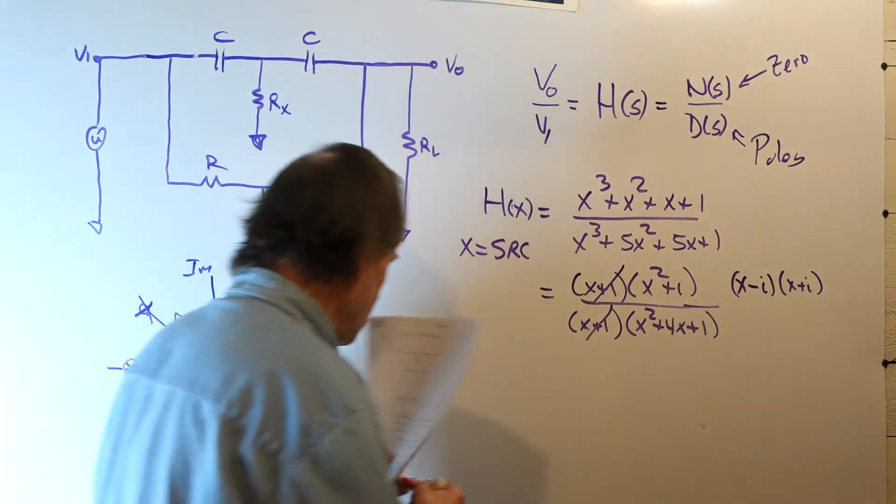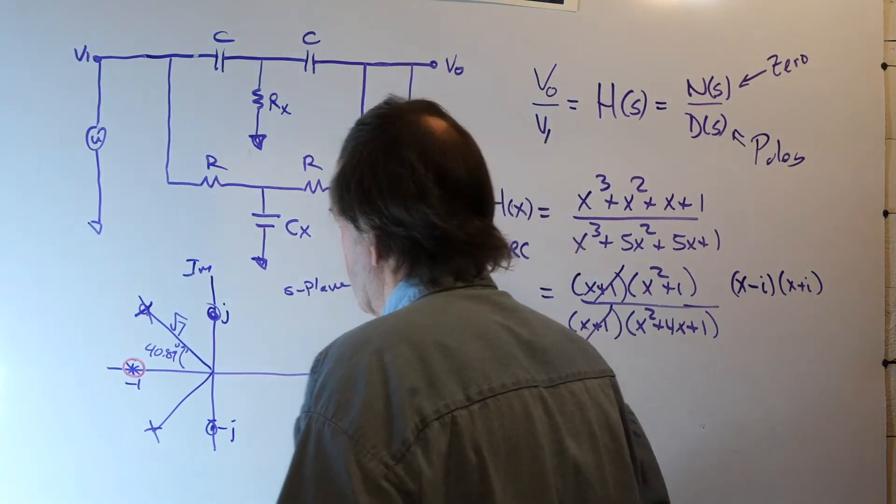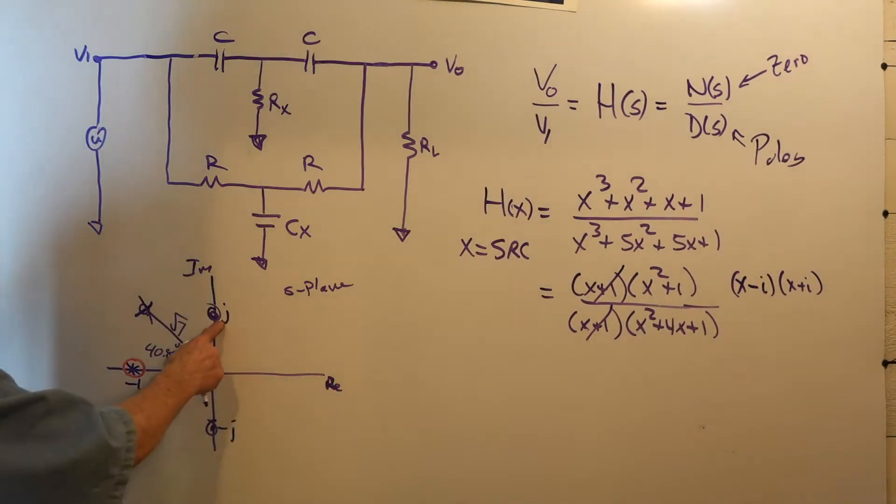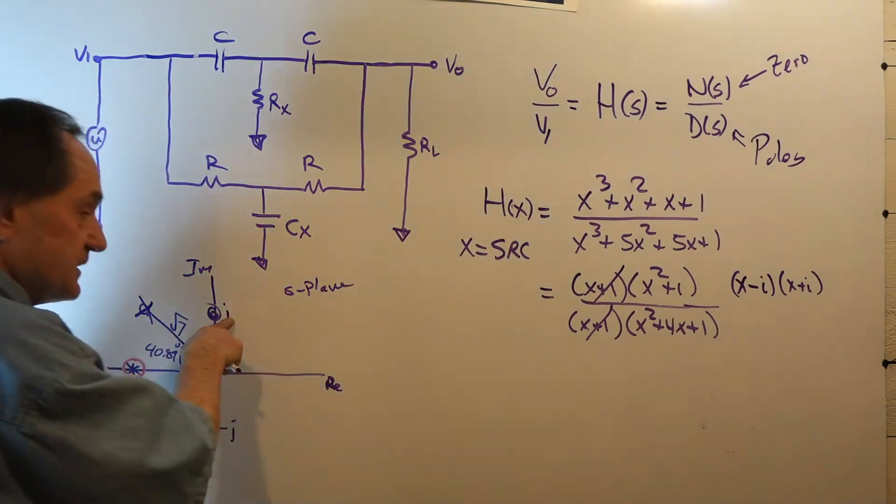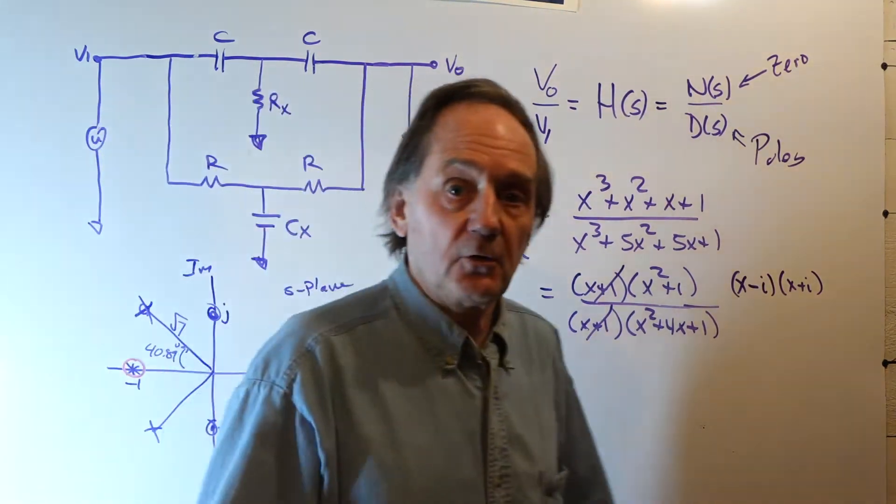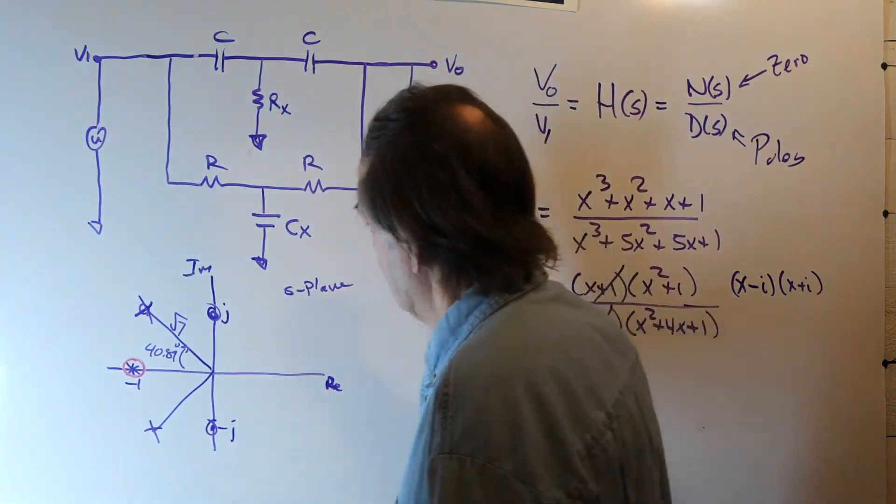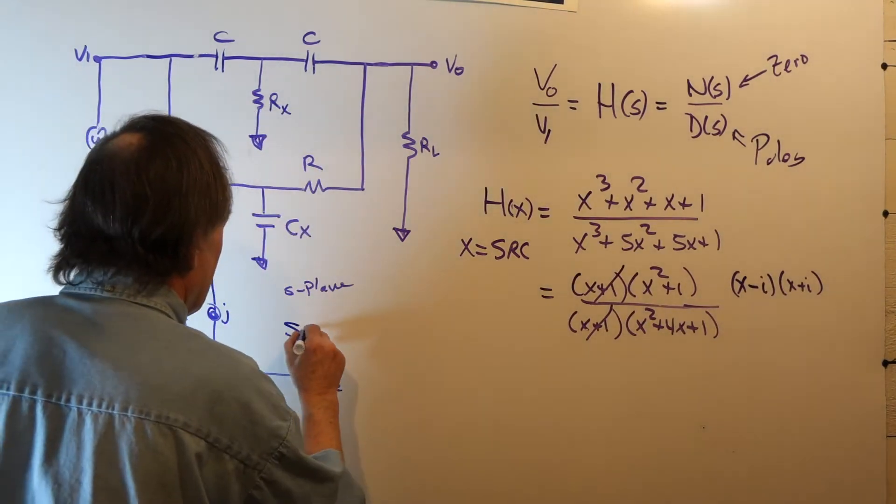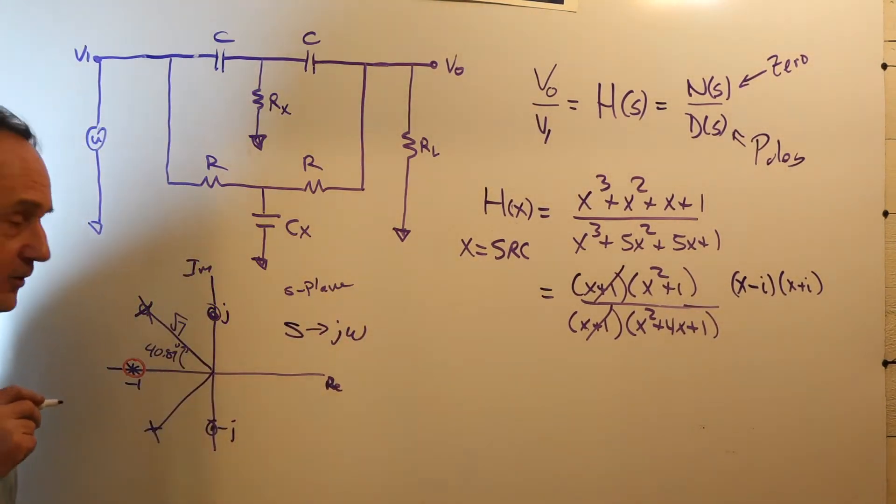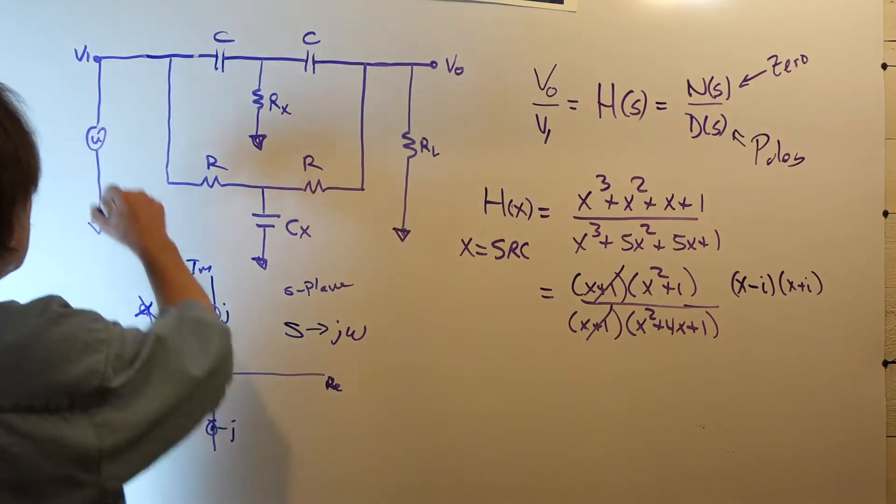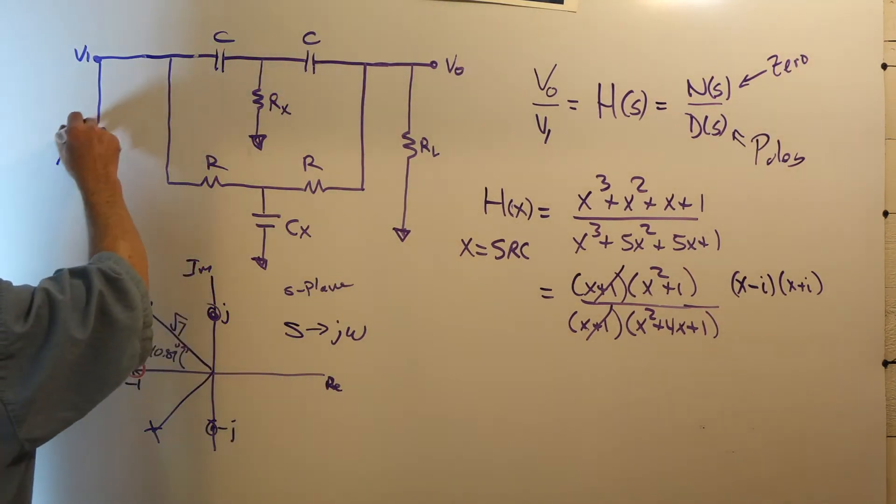Now, what this means is that the fact that we have a zero on the J omega axis means that at this frequency, the response goes to zero. Because as we make S go to J omega, like we do when we do Bode plots and AC analysis, as we vary the frequency omega,